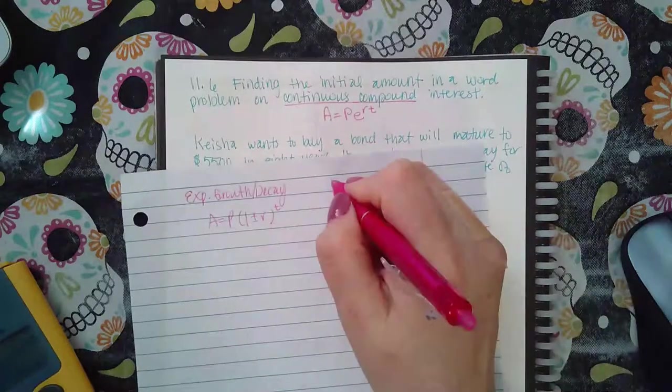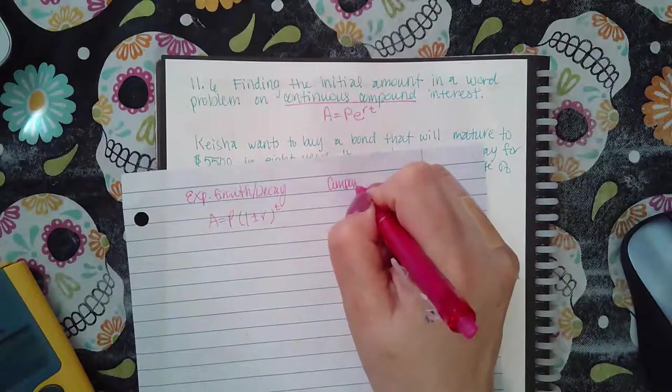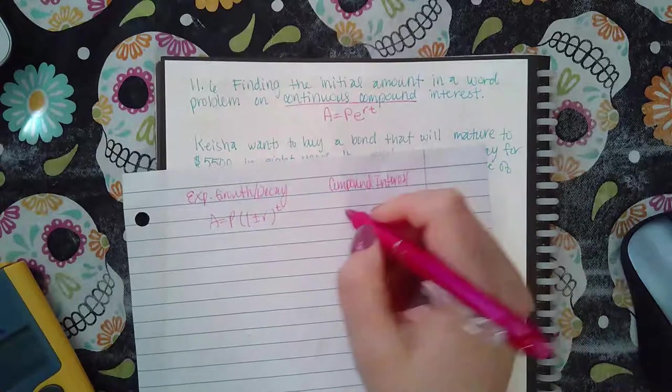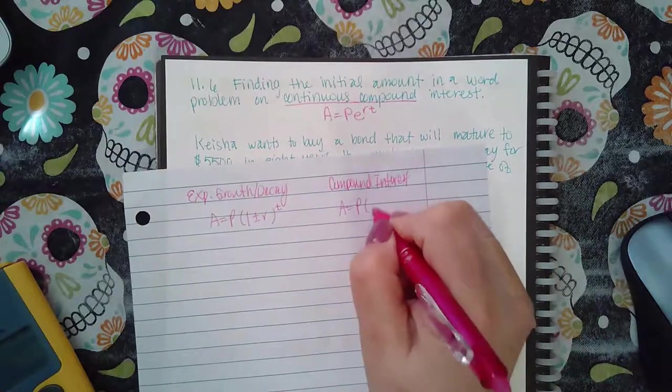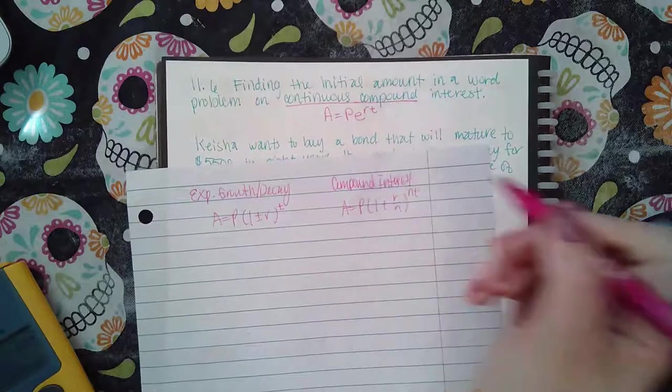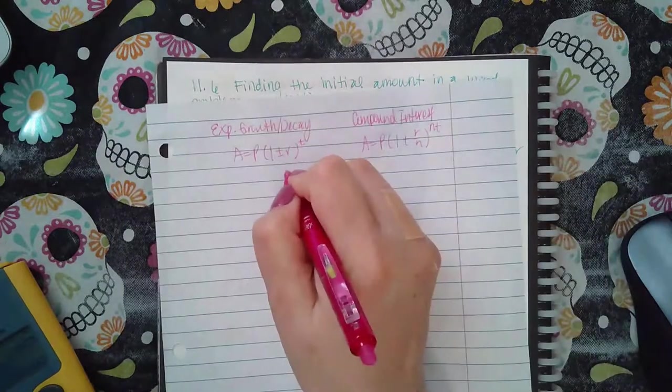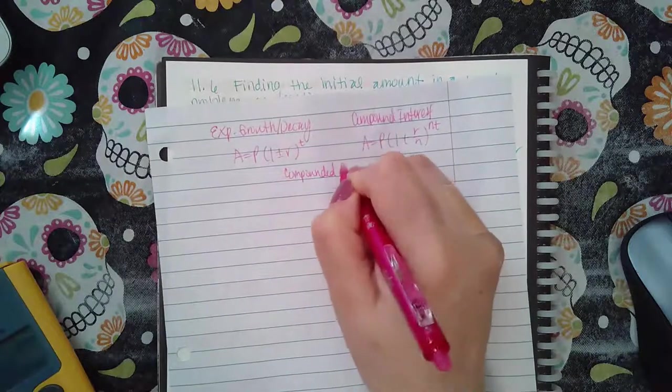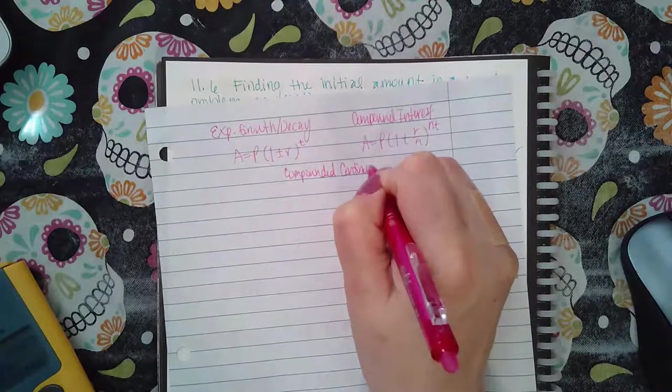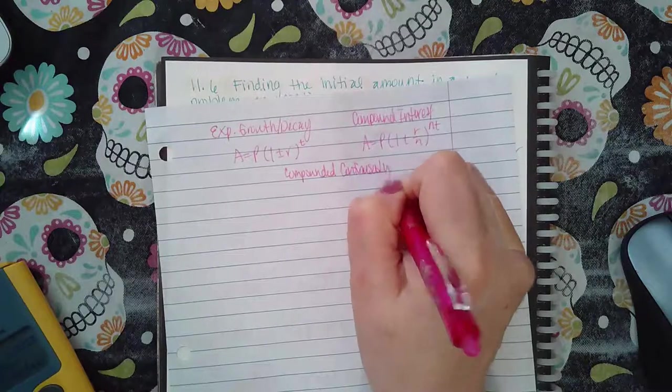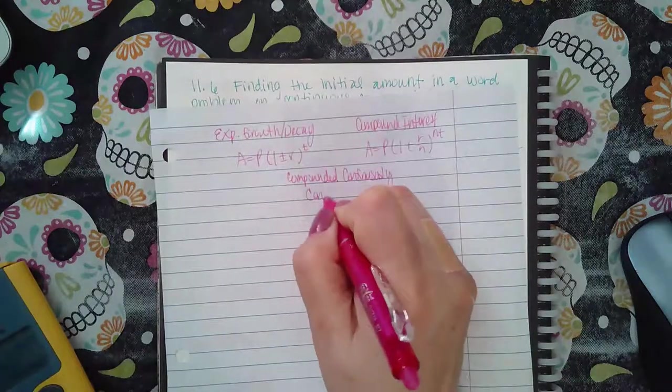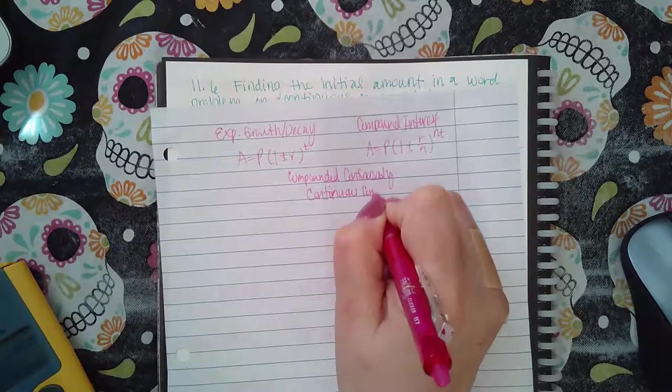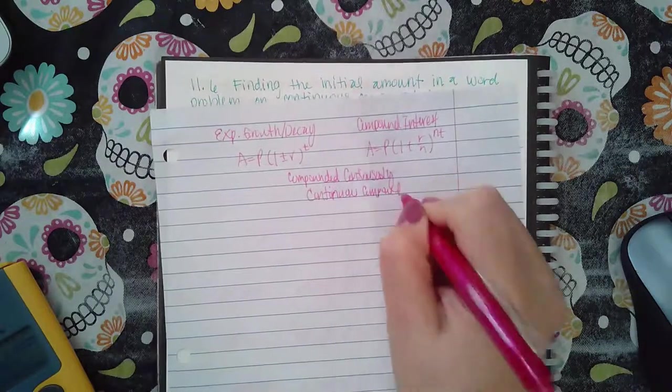Then you have compound interest, which is A equals P times one plus R over N to the NT. And then you have compounded continuously or continuous compound, however you say it, continuous compound interest.